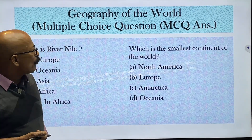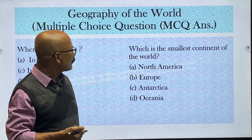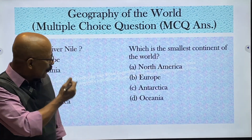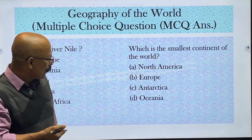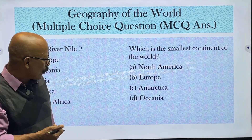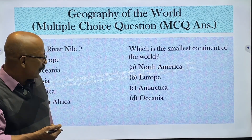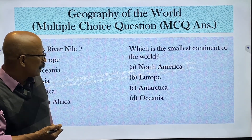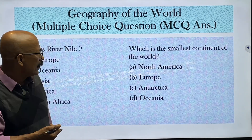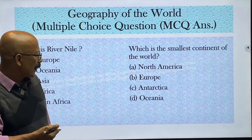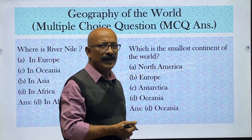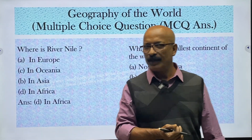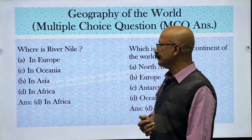Which is the smallest continent of the world? Options are North America, Europe, Antarctica, and Oceania. The answer is Oceania — Oceania is the smallest continent among these four.